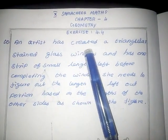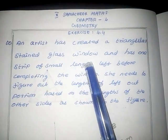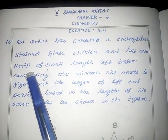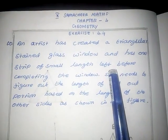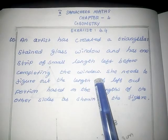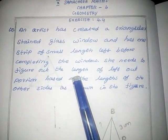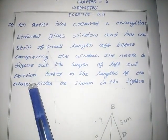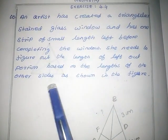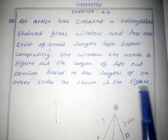An artist has created a triangular stained glass window and has one strip of small length left before completing the window. She needs to figure out the length of the left out portion based on the length of the other sides as shown in the figure.